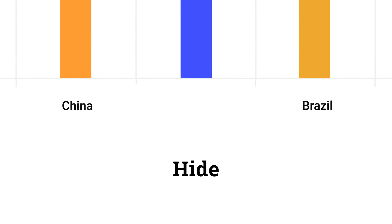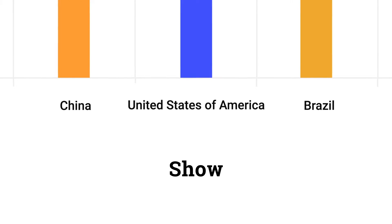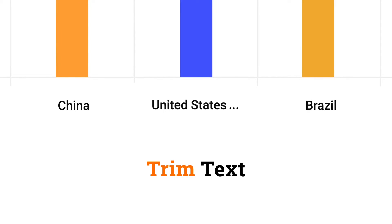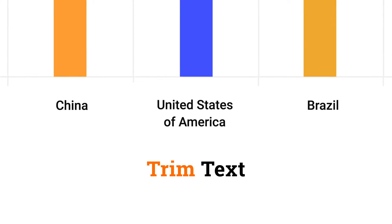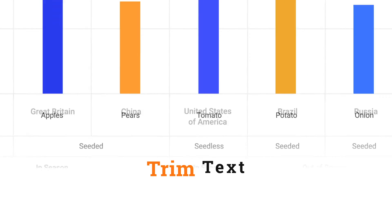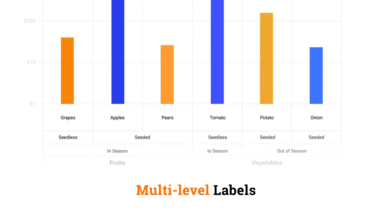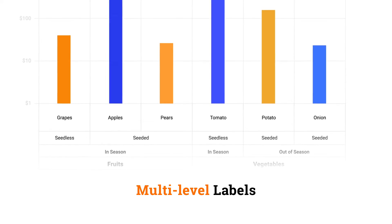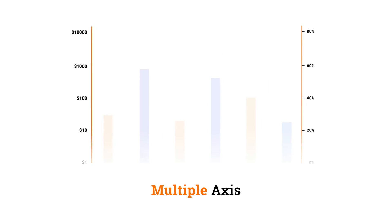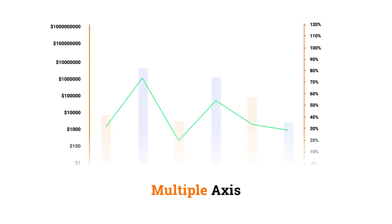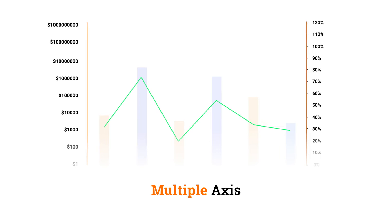You can hide, show, and trim text using the smart label feature. You can also add multiple level labels to display hierarchical data. Add multiple axes to show different values in the same chart.